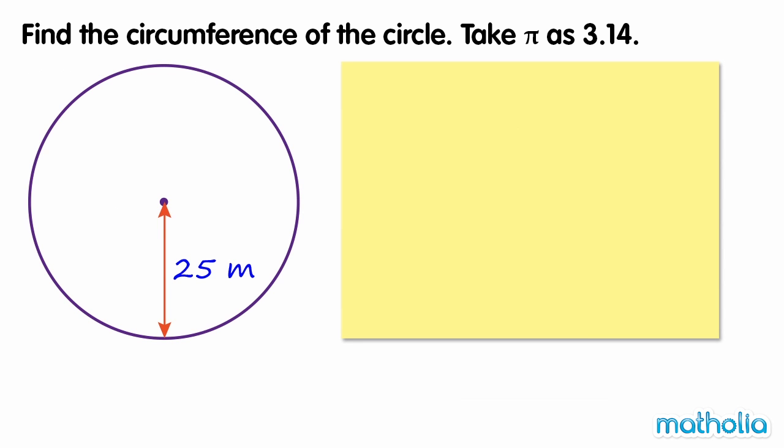Find the circumference of the circle. Take pi as 3.14. The circumference of a circle is given by 2 times pi times radius.